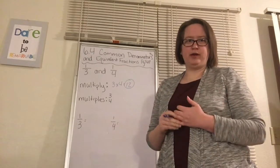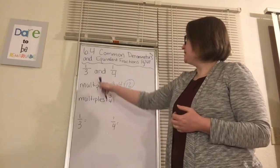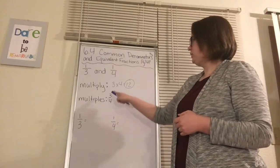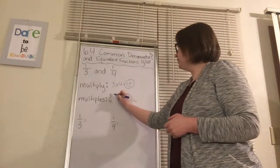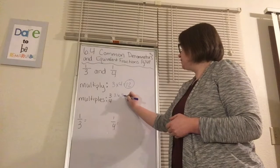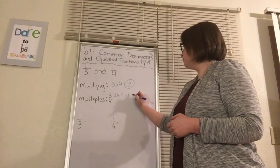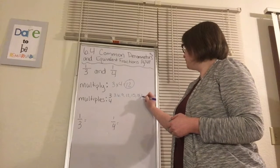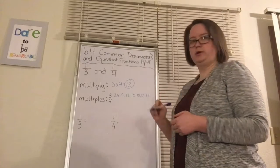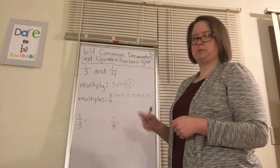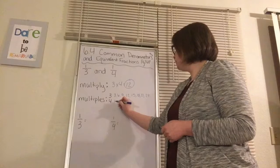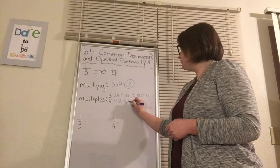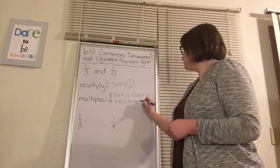Another way that we can find our common denominator is to list out our multiples of our two denominators. So if we have 3 and 4, we're going to list out our multiples of 3: 3, 6, 9, 12, 15, 18, 21, 24. And then we're going to list out our multiples of 4: 4, 8, 12, 16, 20, 24.